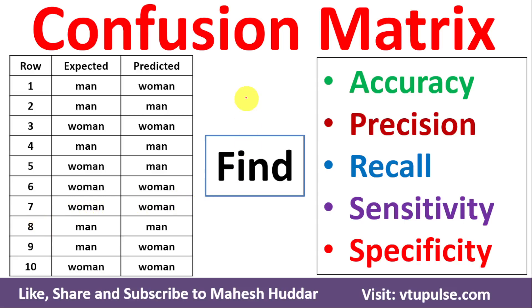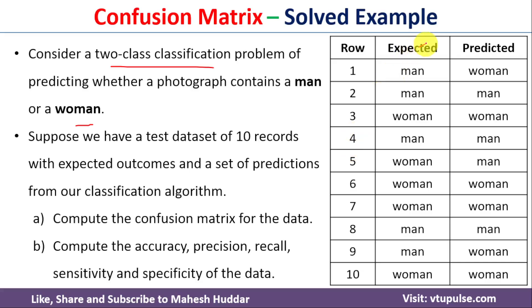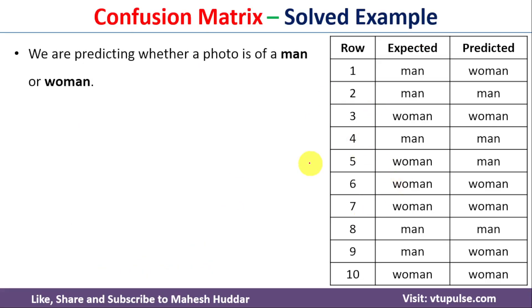Welcome back. In this video I will explain the concept of confusion matrix. We need to find the accuracy, precision, recall, sensitivity, and specificity for the given data. We will consider a two-class classification problem of predicting whether a photograph contains a man or a woman. We have 10 records with expected outcomes and predictions from our classification algorithm.